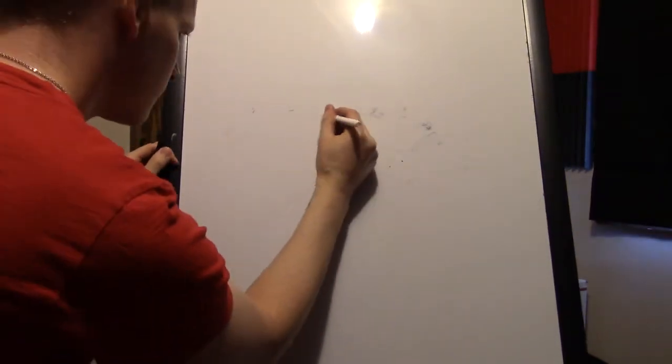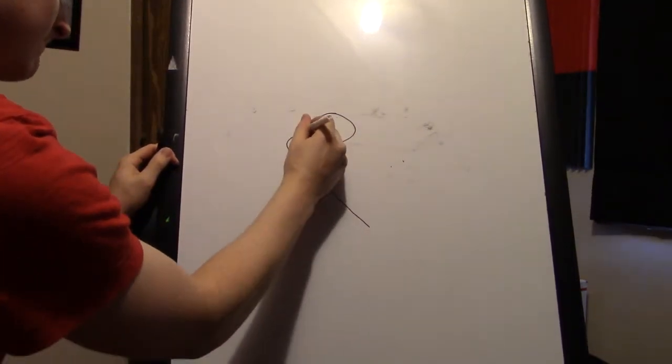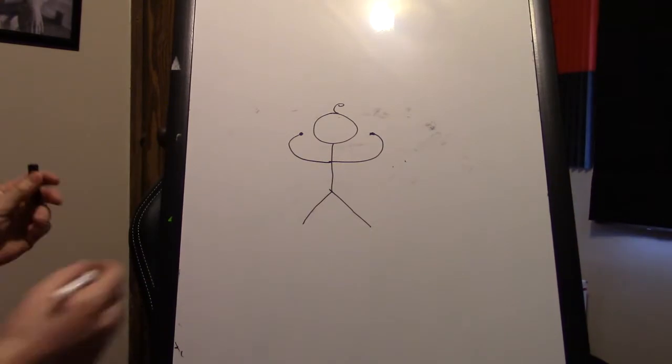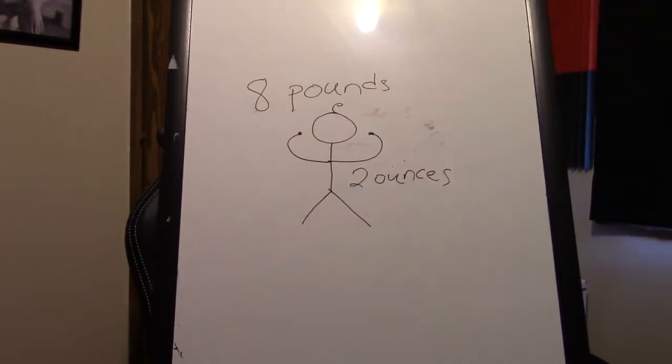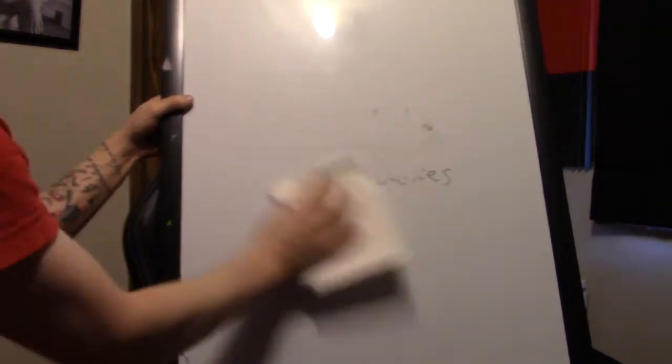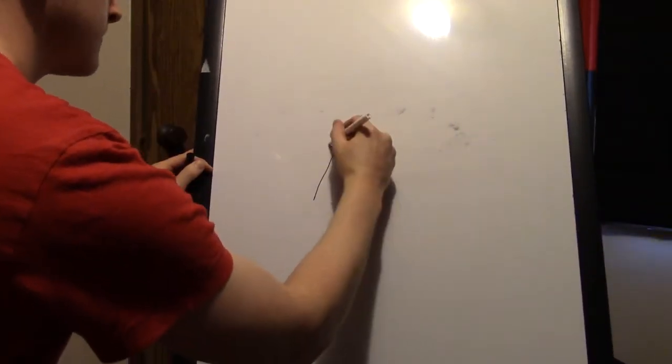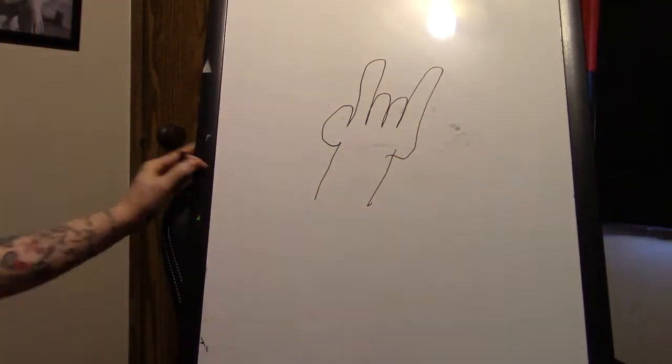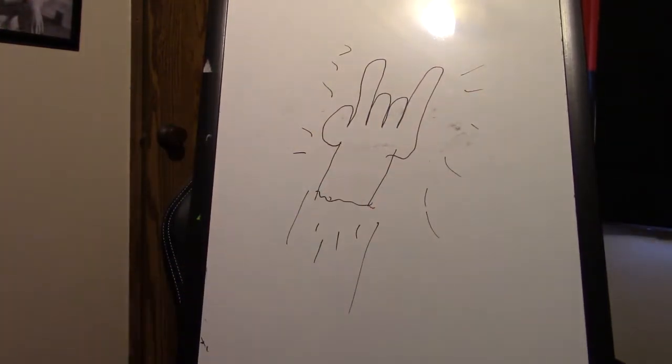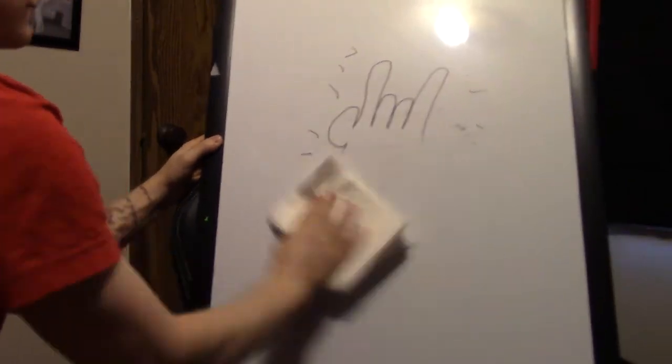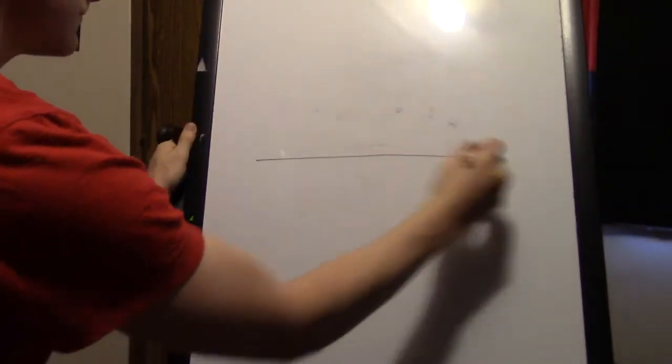This superior specimen weighed in at a whopping 8 pounds and 2 ounces. As he emerged from the womb, the first thing that appeared was a hand with two fingers. I'm just kidding. Highly exaggerating.